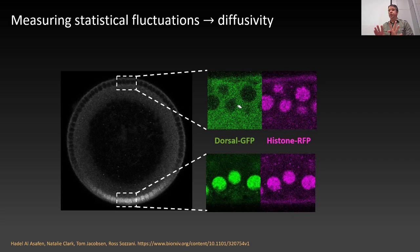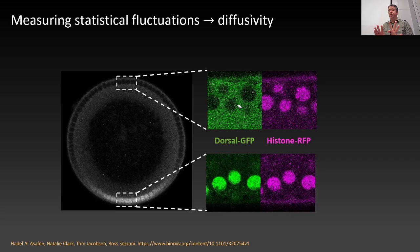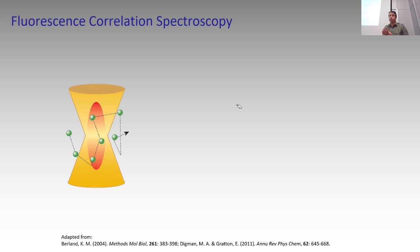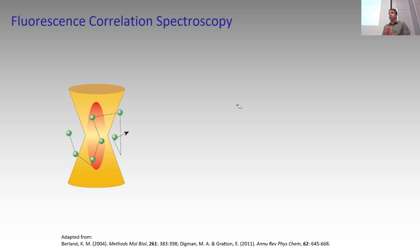What we can do is use these movies and their statistical fluctuations to measure the diffusivity of dorsal. We do that through an offshoot of a technique called fluorescence correlation spectroscopy. These videos were taken with a confocal microscope, where a laser is being focused on a very small portion of the tissue.